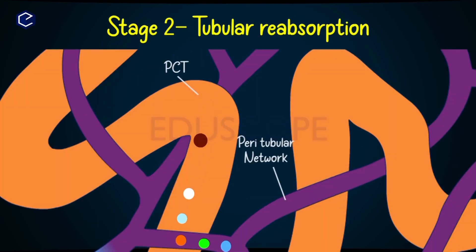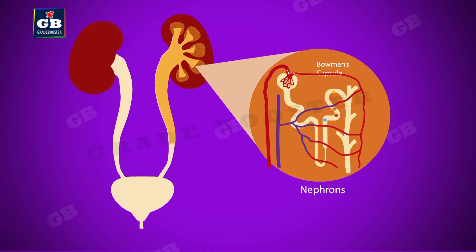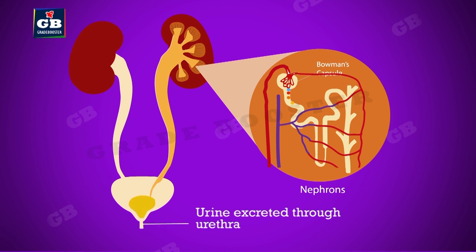Although useful materials are filtered, they later get reabsorbed back into the blood circulatory system. The filtered wastes along with water form urine, which enters the urinary bladder through the ureters.